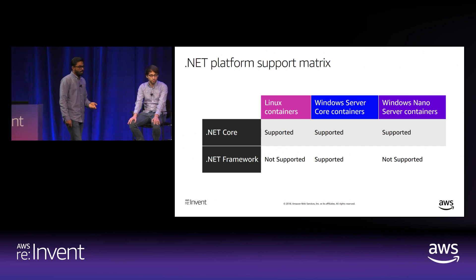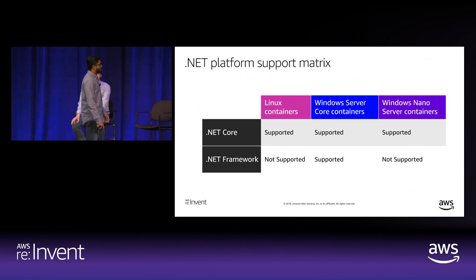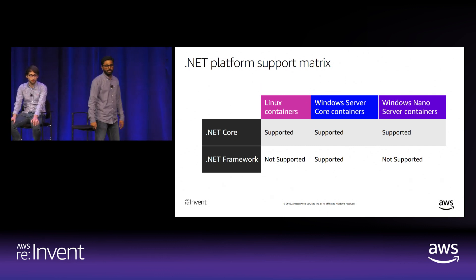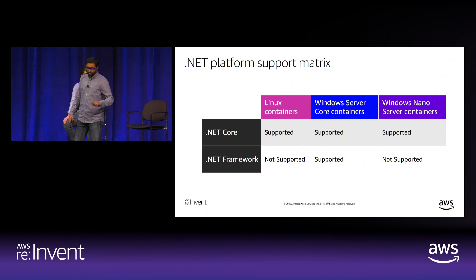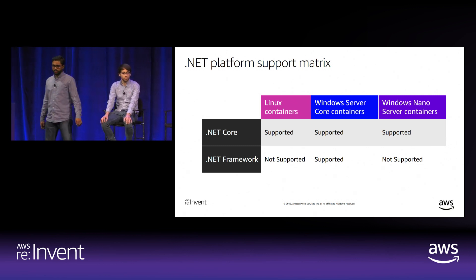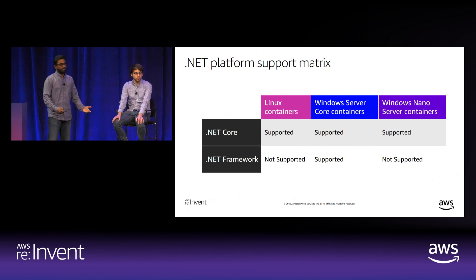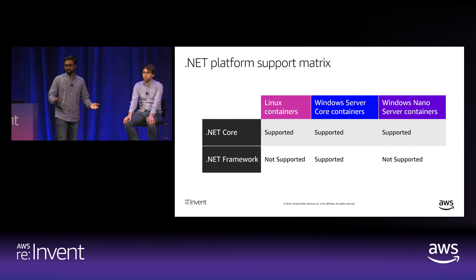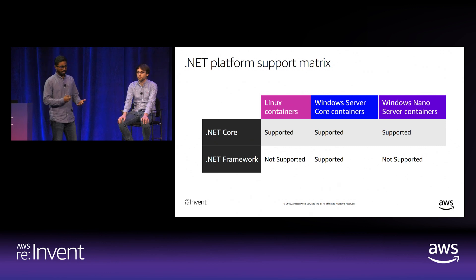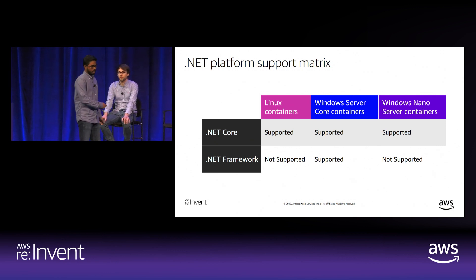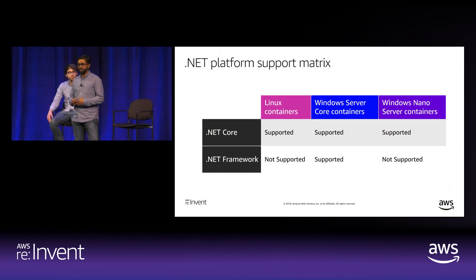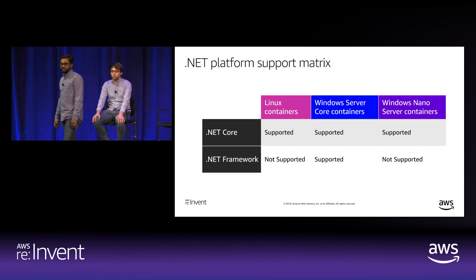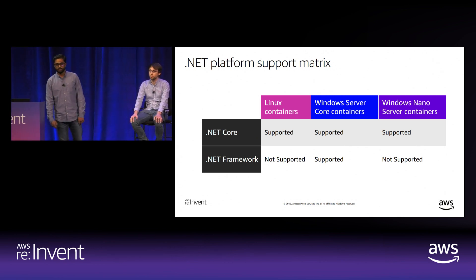If it's .NET Framework, it cannot run on Linux, and Nano Server does not support .NET Framework either because it's highly optimized for .NET Core and can only run 64-bit applications. So you're left with Windows Server containers if you have a .NET Framework application. This is great for a lift-and-shift scenario—many customers have legacy LOB applications, including Thomson Reuters, that have to stick with .NET Framework, but they can still run in a containerized environment hosted on ECS.